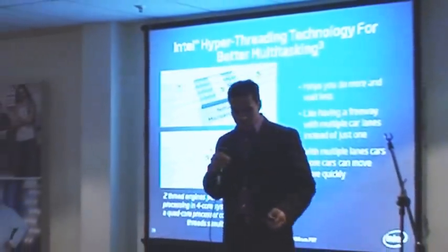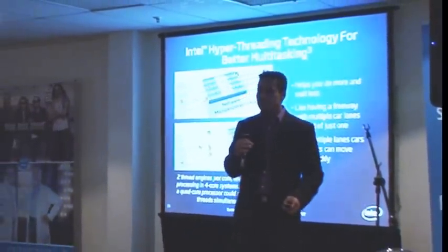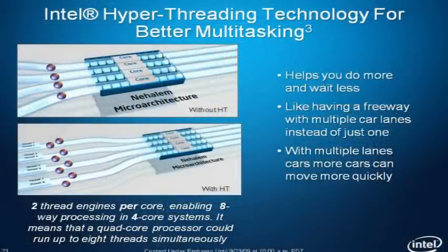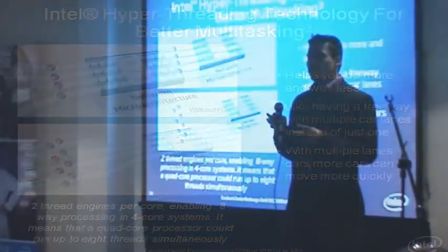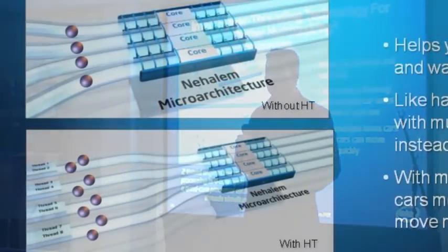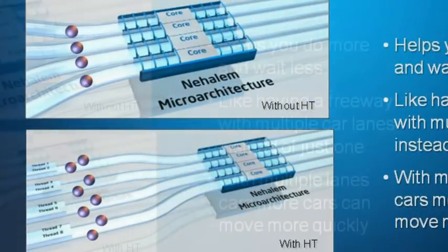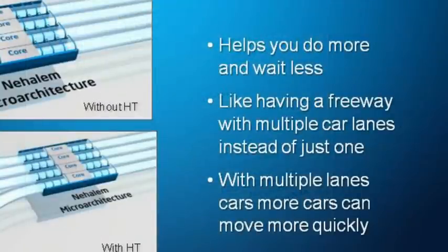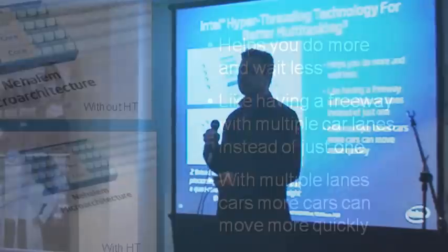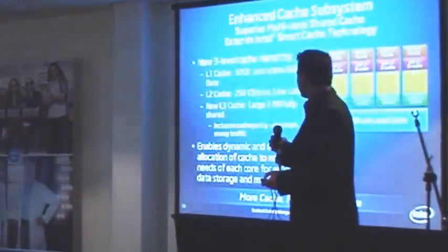Hyperthreading is another feature for performance and power efficiency. Some of you have seen hyperthreading from the Pentium 4 era — the HT logo. This is similar: simultaneous multi-threading, or hyperthreading. Current CPUs are quad-core and handle four tasks, but the processors launching today are quad-core with multi-threading, meaning you can run eight threads or eight tasks simultaneously. For end-users, this means less waiting — they see the hourglass less often.